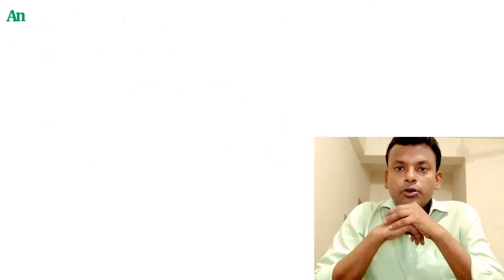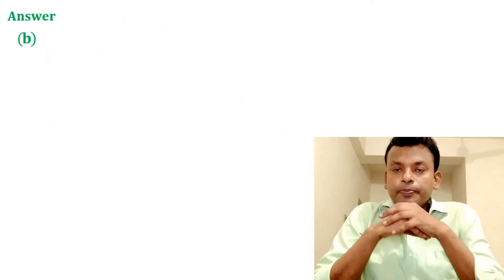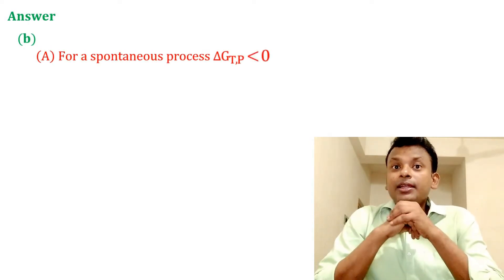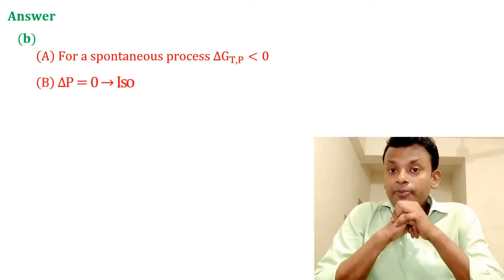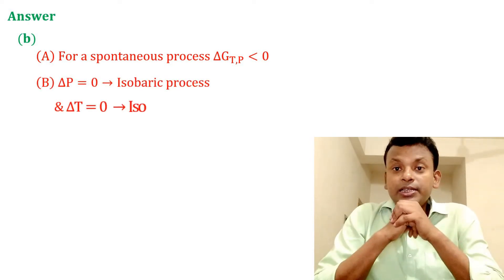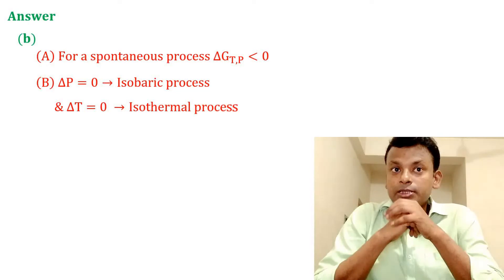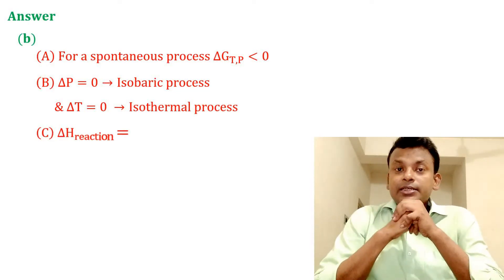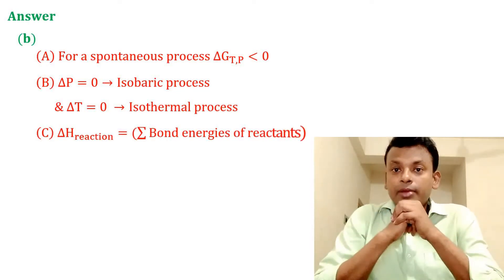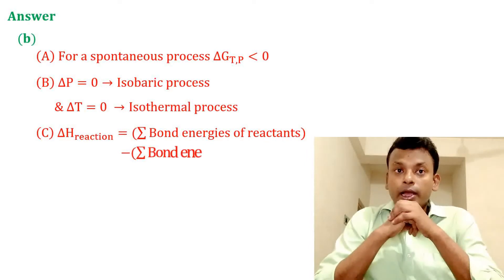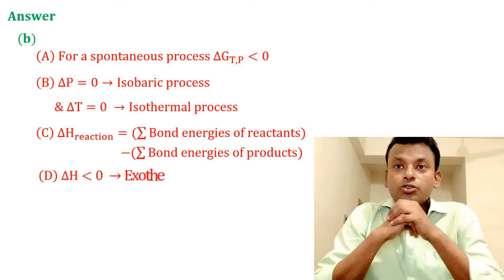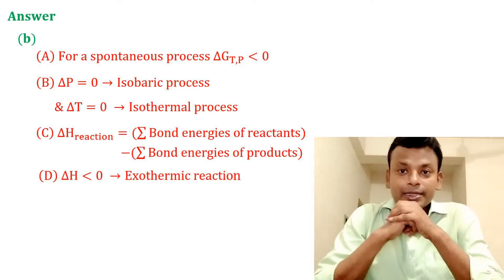Answer: option B is the correct answer. For a spontaneous process ΔG < 0. ΔP = 0 means isobaric process. ΔT = 0 means isothermal process. ΔH_reaction = Σ bond energy of reactants − Σ bond energy of products. ΔH < 0 means exothermic reaction. So option B is correct.